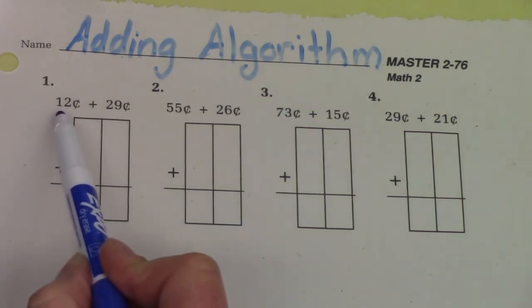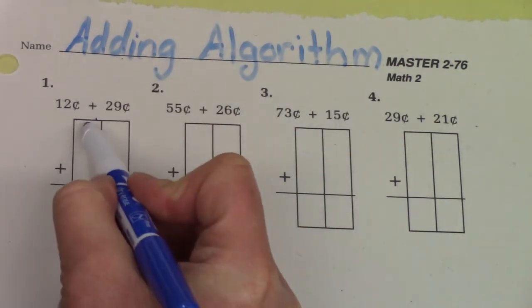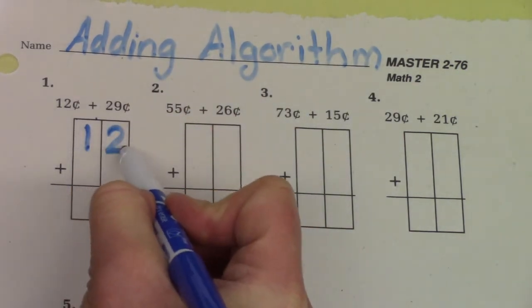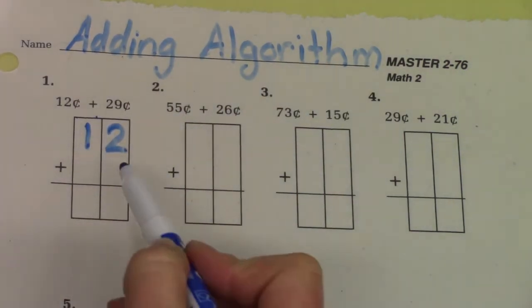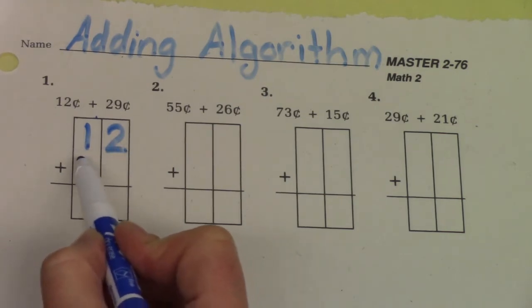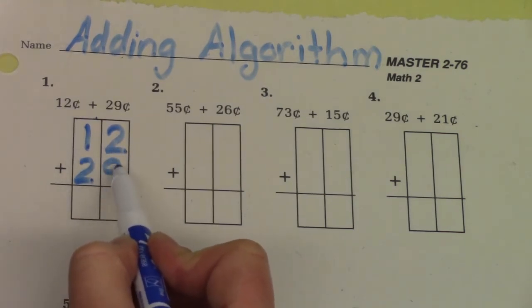Our first question says 12 cents plus 29 cents and we are going to write that on our little graph. We have 12 cents plus 29 cents.